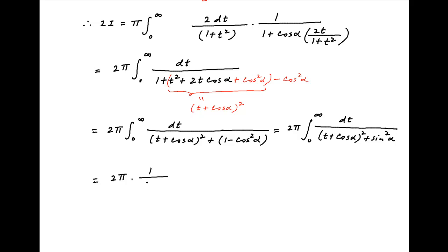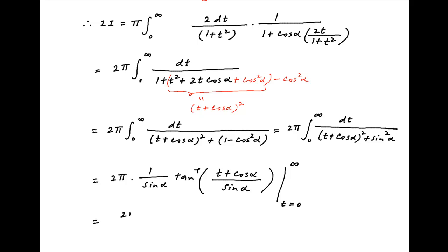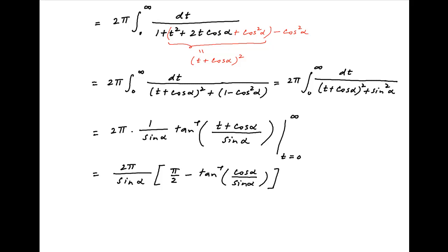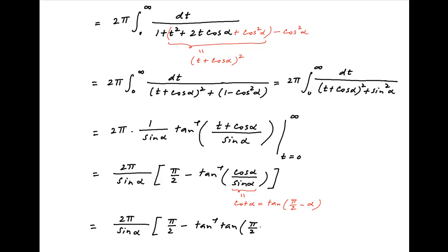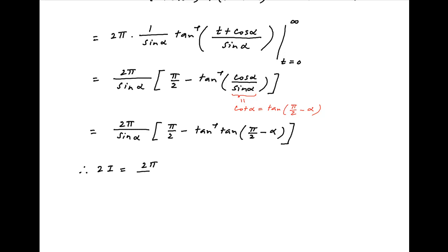This equals 2π times (1/sin α) · tan⁻¹((t + cos α) / sin α), evaluated from t = 0 to t = ∞. Putting in the limits, 2i = (2π / sin α) times [π/2 − tan⁻¹(cos α / sin α)]. Now cos α / sin α = cot α = tan(π/2 − α), so substituting, 2i = (2π / sin α) times [π/2 − (π/2 − α)]. The π/2 terms cancel inside the brackets, leaving 2i = (2π / sin α) · α.